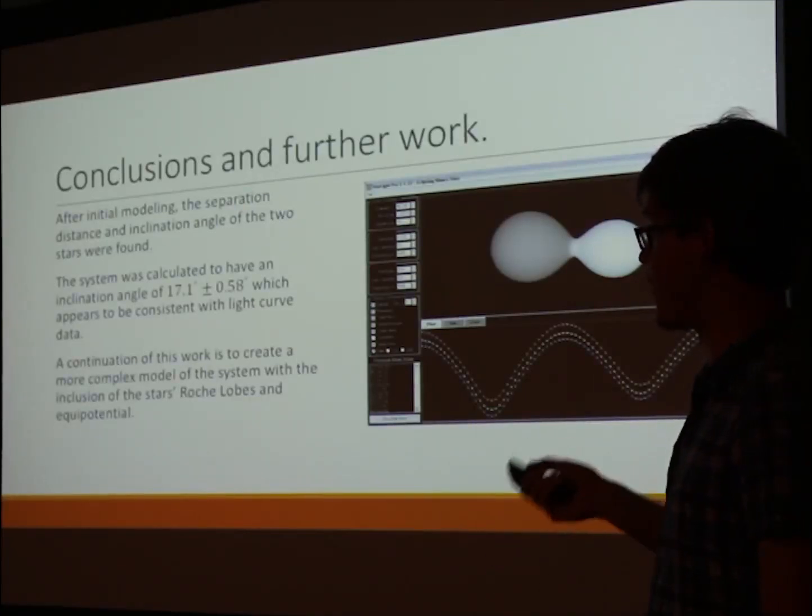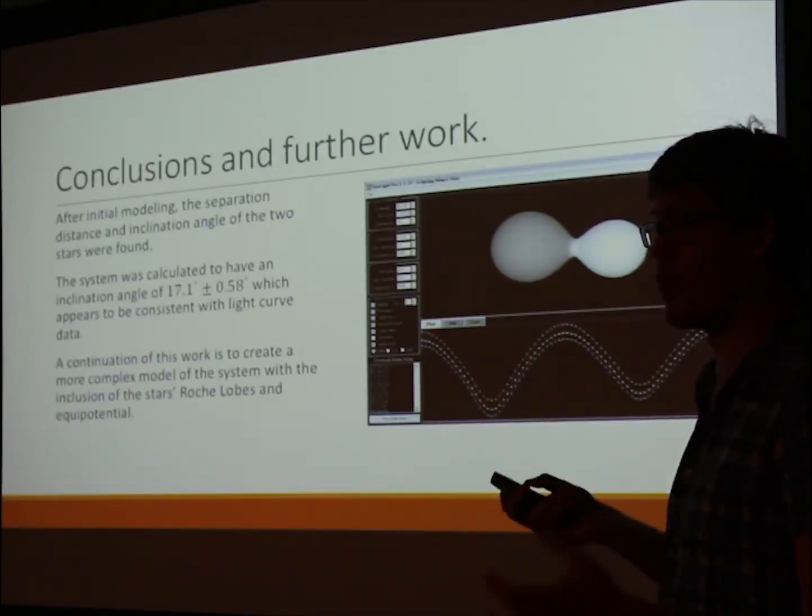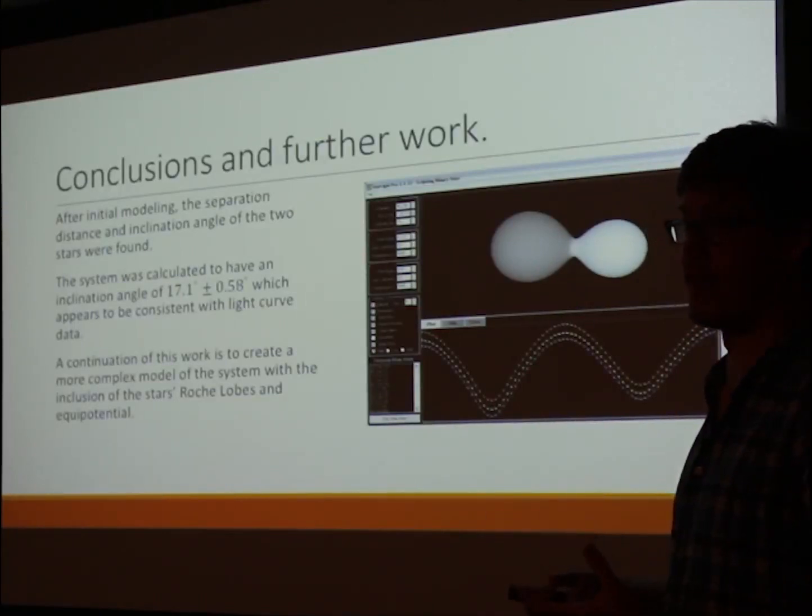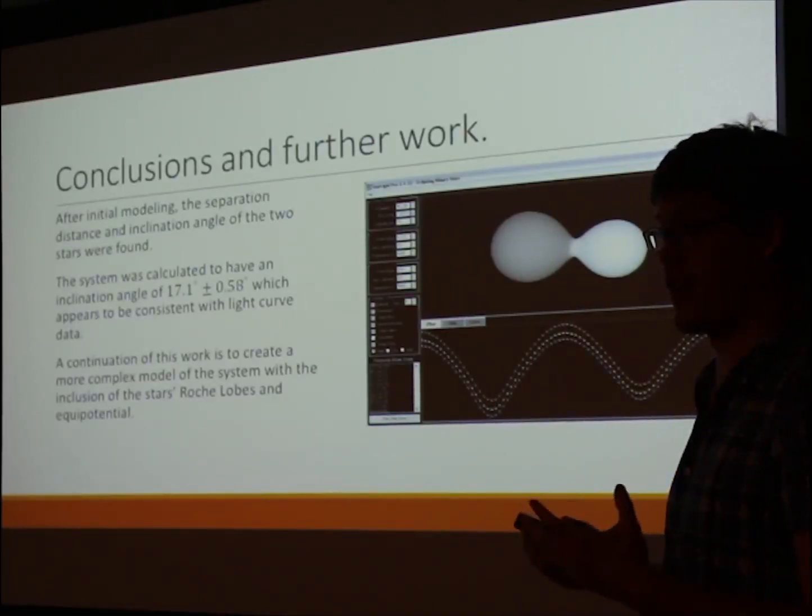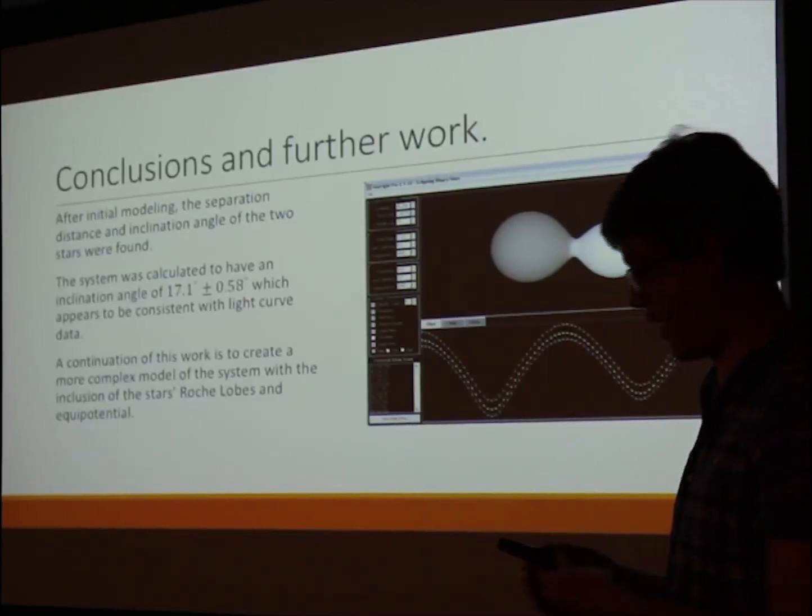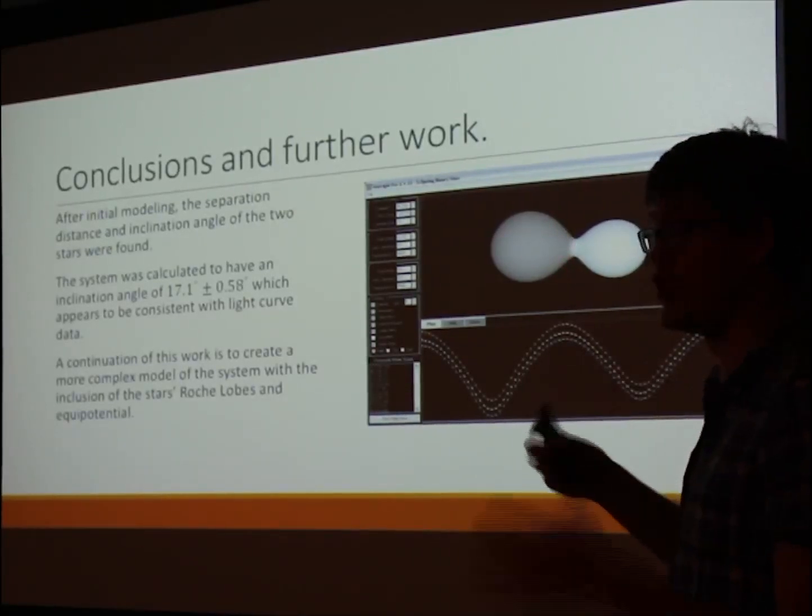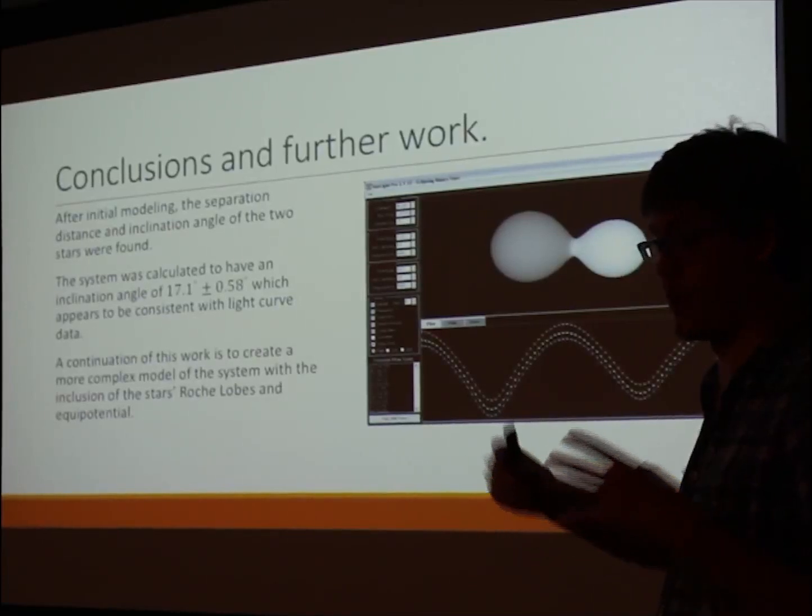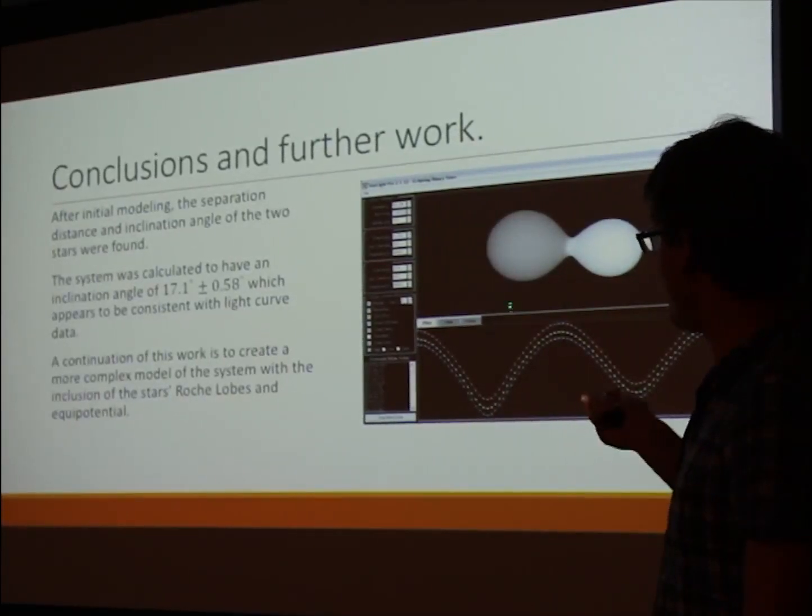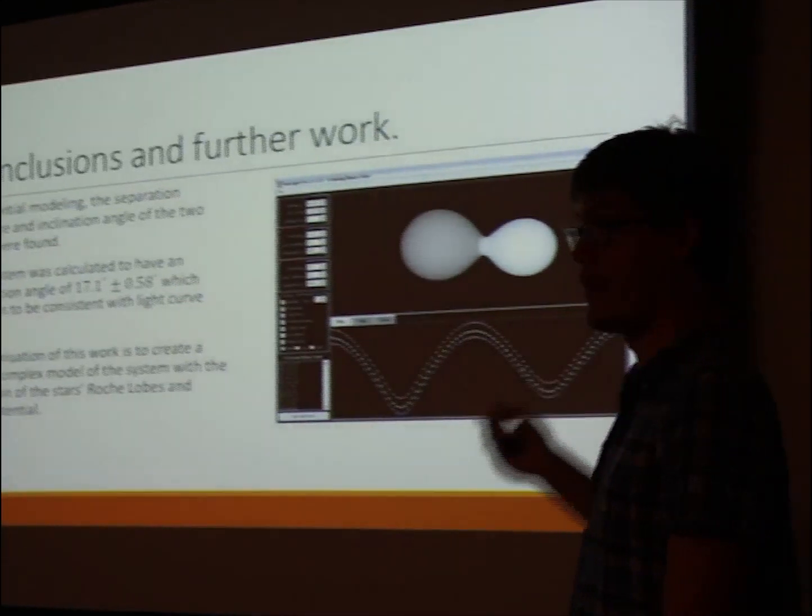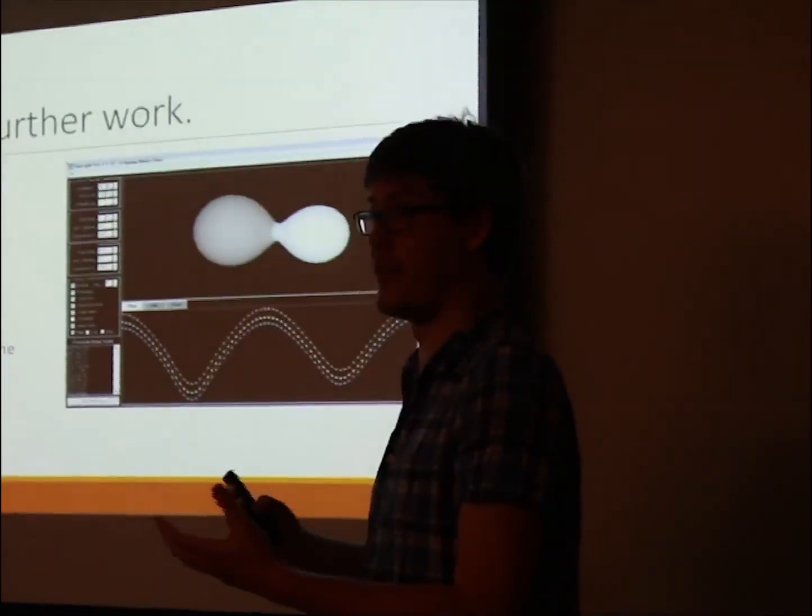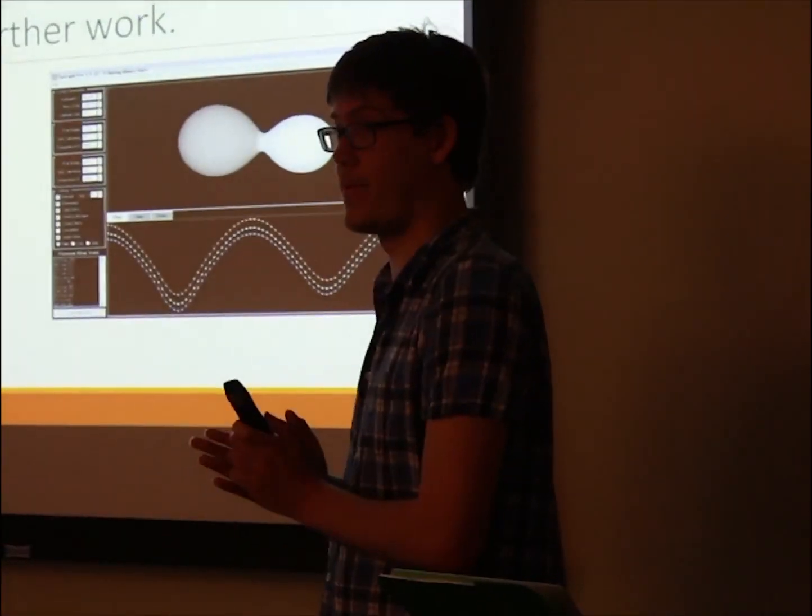Conclusions and further work: I found that the inclination angle was around 17.1 degrees, which is consistent with my research. Some further work I would like to do is create a more robust model of the system, treating each star not as a simple sphere but including this region of the contact binary, which is some shared material between the two—it deforms the shape of the star. These are known as Roche lobes, and that would be the next step in this research. Thank you.